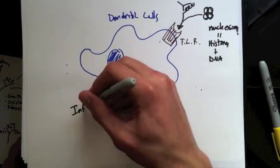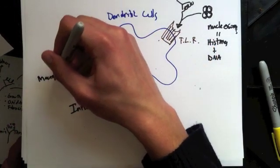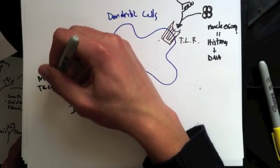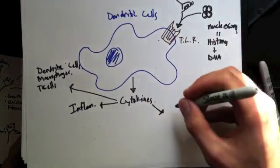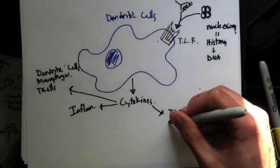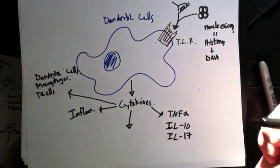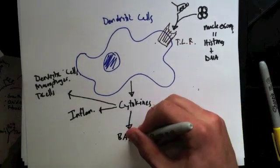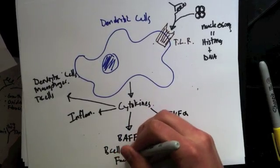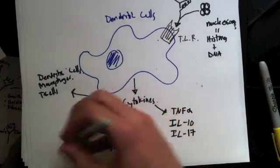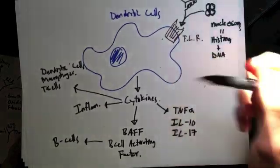And those cytokines are going to cause inflammation and also the recruitment of other cells, like macrophages, T-cells, and other dendritic cells. And kind of just so in case you want to know, some of those cytokines include tumor necrosis factor alpha, interleukin 10, and interleukin 17. One of the cytokines that Tanya mentioned specifically in her LO, she covered this same topic, is called BAAF, which is B-cell activating factor. And what B-cell activating factor is going to do is it's going to recruit more B-cells. So you're going to get more antigens, and it's going to cause kind of a positive feedback loop, which is also what these cells are going to do.